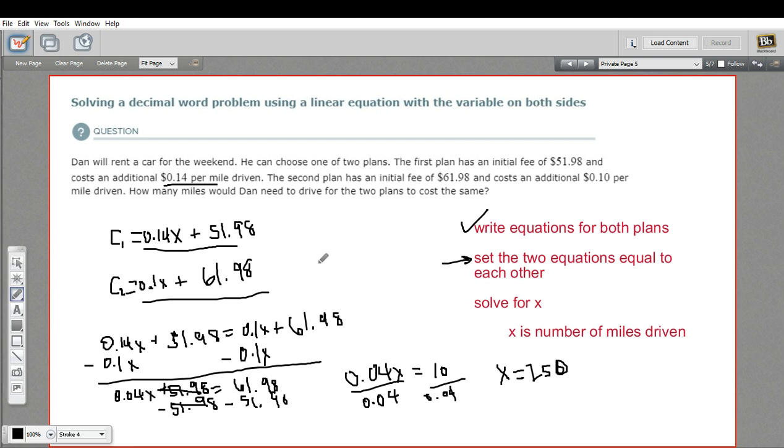That's the number of miles to drive where both the plans are the same. If you're going to drive less than that, you should take that first plan where the amount per mile costs more. If you're going to drive more than 250 miles, you should take the second plan. So that is how to solve a word problem with this type of linear equation.